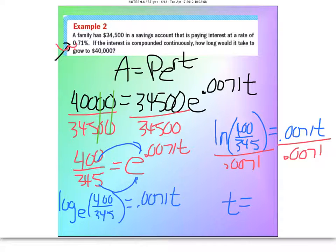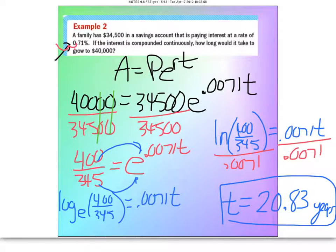When you do that, what you're going to get for an answer is 20.83, and the time period we're talking about here is going to be in years. So it's going to take them over 20 years to make their money grow from $34,500 to $40,000 if someone is sitting at the bank hitting the button continuously, but it's a pretty low interest rate, so that's why.